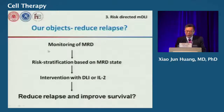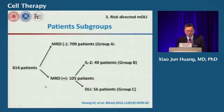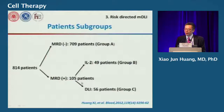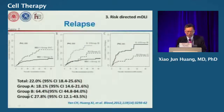Our protocol involves routine MRD monitoring after transplantation, risk-stratifying patients and intervening with donor lymphocyte infusion based on MRD status. For patients without a suitable donor, interleukin-2 can be used. In this study of 800 patients, approximately 700 were MRD-negative in group A, and 105 patients were MRD-positive, receiving either interleukin-2 or donor lymphocyte infusion.